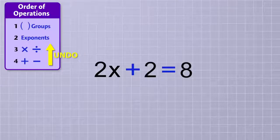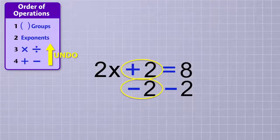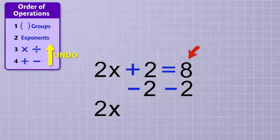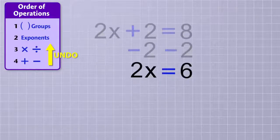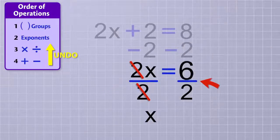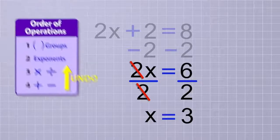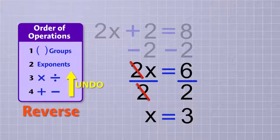So first, we undo the addition by subtracting 2 from both sides of the equation 2x + 2 = 8. The plus 2 and the minus 2 cancel each other out, leaving just 2x on that side. And on the other side, we have 8 minus 2, which is 6. Next, we undo the multiplication by dividing both sides of the equation by 2. The 2's cancel, leaving x all by itself. And on the other side, we have 6 divided by 2, which is 3. We've solved the equation using the order of operations rules in reverse, and now we know that x equals 3.